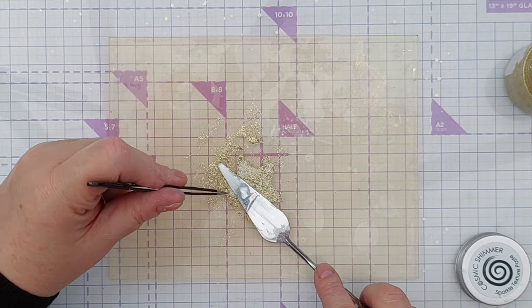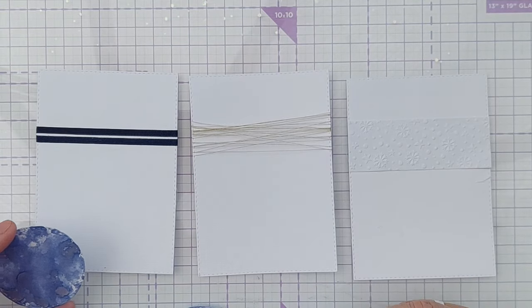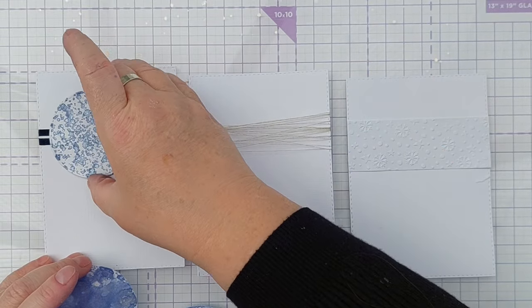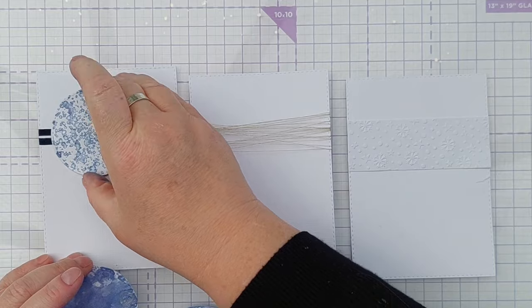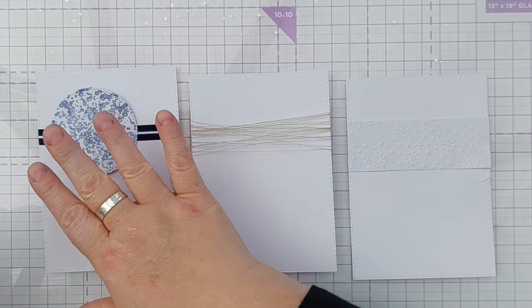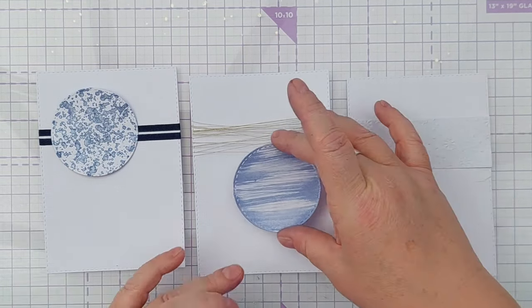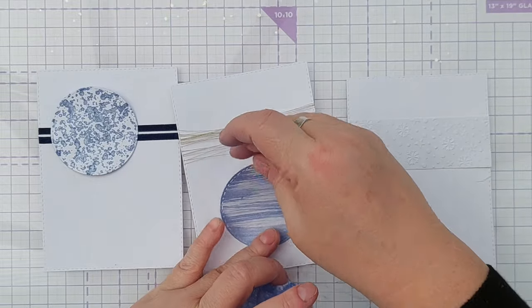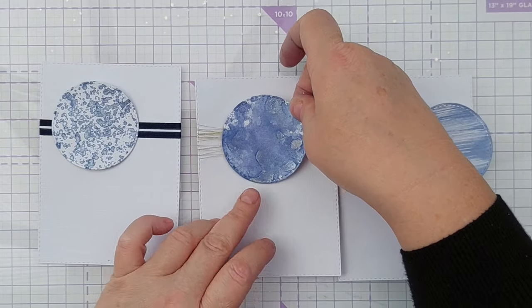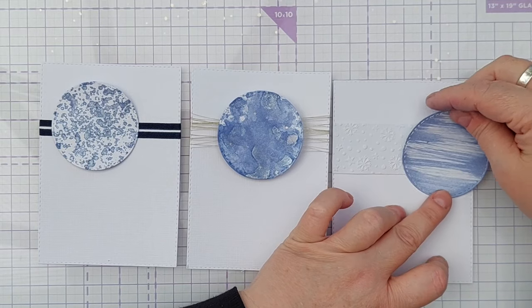Right I'm going to add my circles now. I think I'll add the splattery circle to this solid ribbon background because I think that's a nice contrast between the splatters and the solid. This I think I'm going to put on there because I don't want two lots of thin lines on the same card. And that one I think works well on there. This one I'm going to put over to the right and hang it off the page.